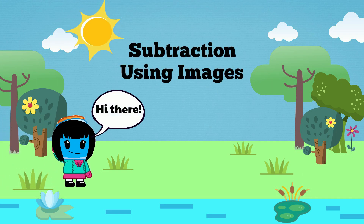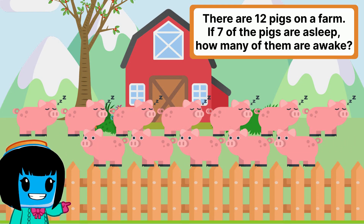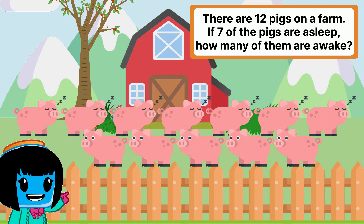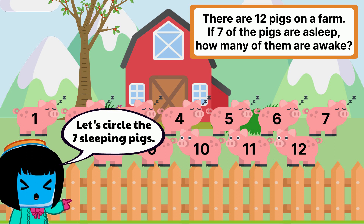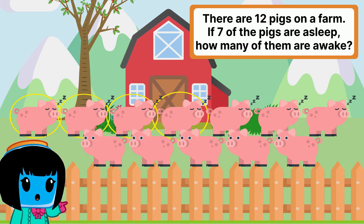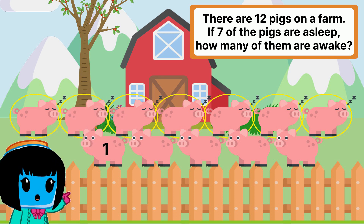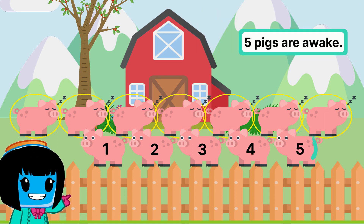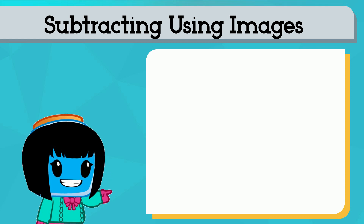Hi there! Today we are going to be subtracting. There are 12 pigs on a farm. If seven of the pigs are asleep, can you tell me how many of them are awake? So we have our 12 pigs. Let's circle the seven pigs that are asleep. If we count the pigs that are not circled, we have one, two, three, four, five pigs that are awake.